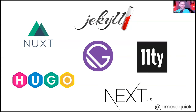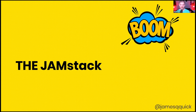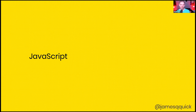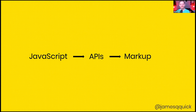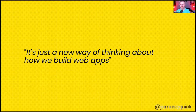All this talk about static sites gets into the idea of the JAMstack. JAM stands for JavaScript, API, and Markup. Interestingly, JAMstack is becoming very popular right now even though none of those things are new — we've used JavaScript, APIs, and markup for a long time. The JAMstack is really just a new way of thinking about building web applications, and the demo will make this more clear.